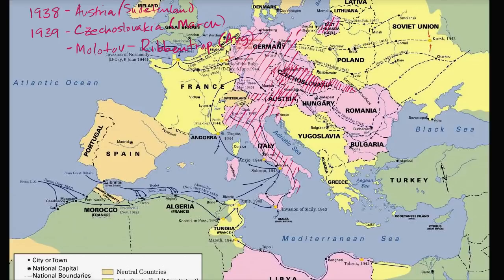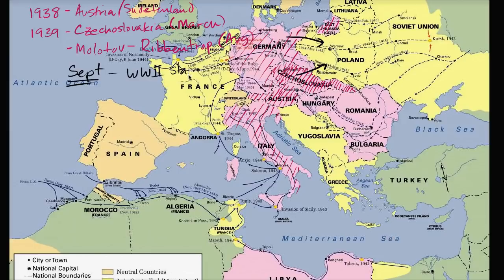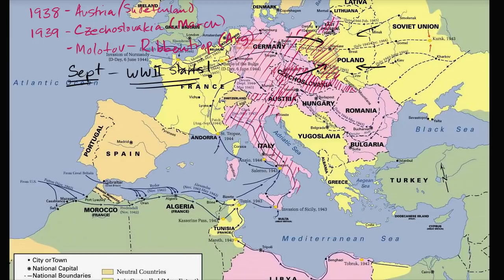That leads us to the formal start of World War II. On September 1st, 1939, Germany invades Poland, which is generally considered the beginning of World War II. Great Britain and France then declare war on Germany. At this point Stalin isn't so concerned about Hitler — he's just signed the Molotov-Ribbentrop Pact — so in mid-September Stalin himself invades Poland as well, allowing both powers to carve out their spheres of influence.